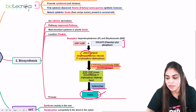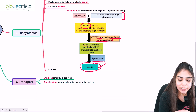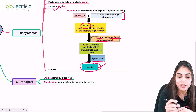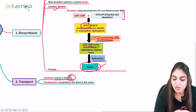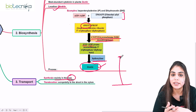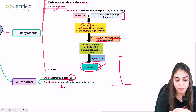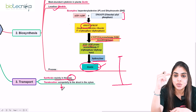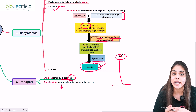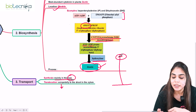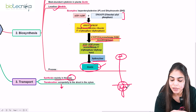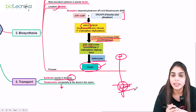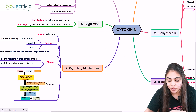Now let's look at the transport mechanism of cytokinin. It is mainly synthesized in the root, specifically in the plastid. From the root, it is transported acropetally to the plant — meaning towards the tip, from root to shoot. This transport is carried out by the xylem, which transports water and nutrients from root to shoot, carrying cytokinin along to different parts of the plant.